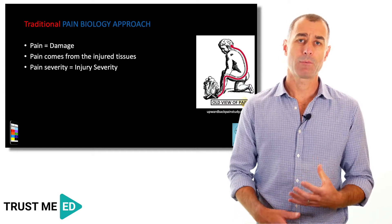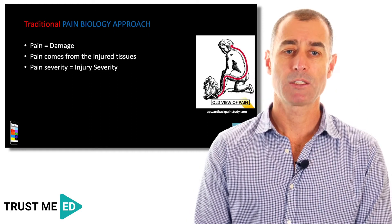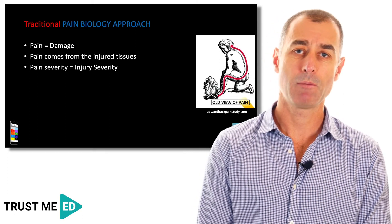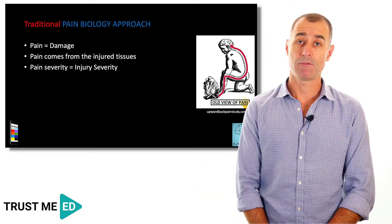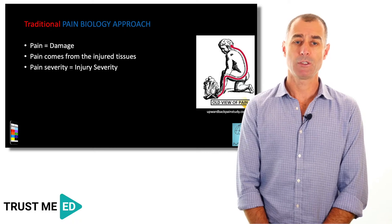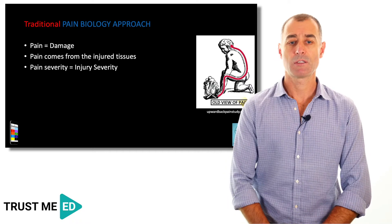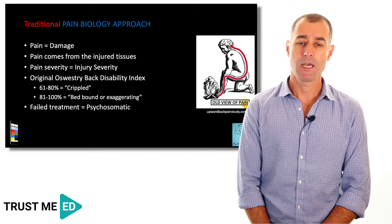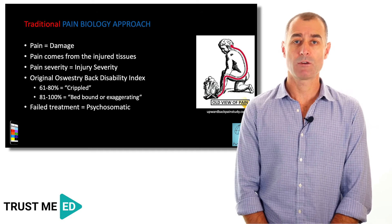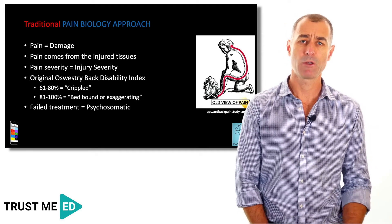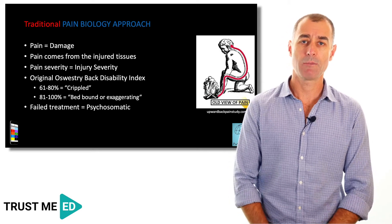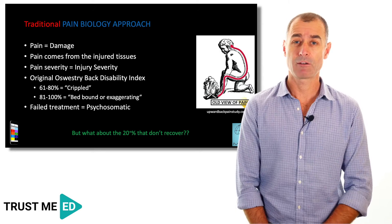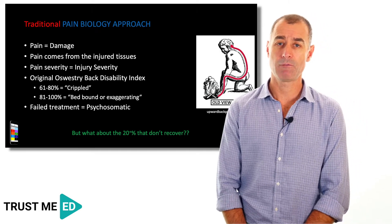That approach was based around a traditional pain biology model — an old-school view where the amount of pain directly correlated with the amount of damage from the injury, and pain comes from those injured tissues. The severity of injury was thought to equal the severity of pain. There was language used such as 'crippled,' 'bed-bound,' or 'exaggerating' for severe symptoms. If people weren't getting better, we figured they had a psychosomatic problem — but what about that 20% who weren't recovering? I personally didn't have many tools to help them.